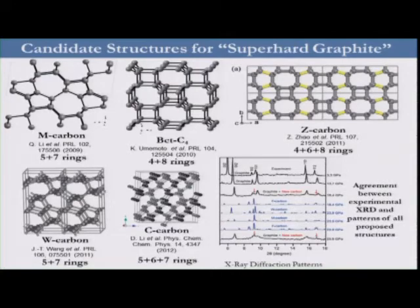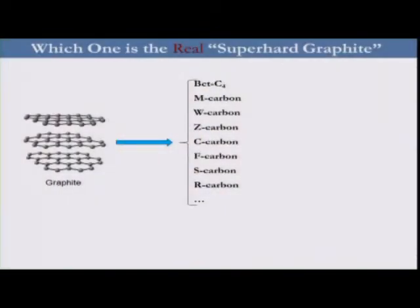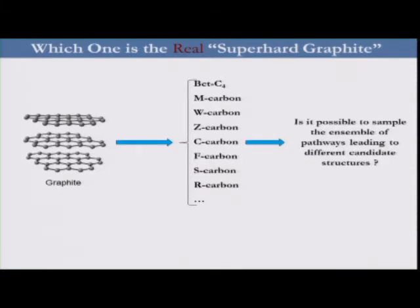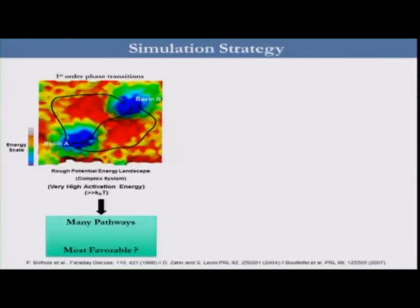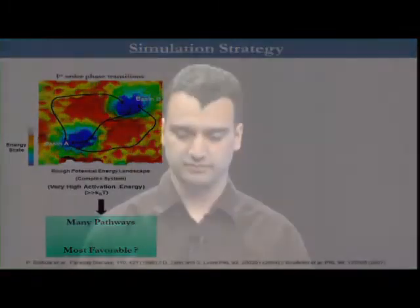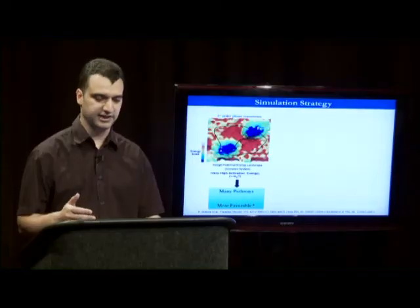This adds more complexity to the problem of super-hard graphite. We have a known starting material and a large number of possibilities as a product phase. So one can ask: how can we explore the ensemble of this large number of candidate structures and find the real one in a reasonable and efficient way? Fortunately, we have a method called Transition Path Sampling, designed mainly to study phase transitions of first-order kinetics — meaning that to switch from phase A to phase B, we must cross a very high activation energy.